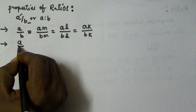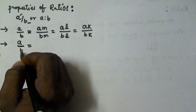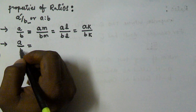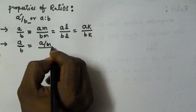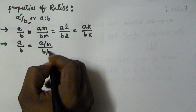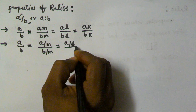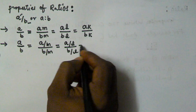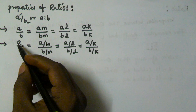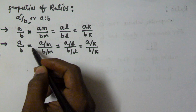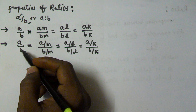Let us take another. So we have a by b as a ratio. If we divide numerator and denominator by the same number or same quantity, the value of the ratio is not going to be changed. For example, (a/m) by (b/m) is also equivalent to a by b. Similarly, (a/l) by (b/l) is equivalent to (a/k) by (b/k). So if the numerator and denominator are divided by the same number or same quantity, the ratio is not going to be changed.